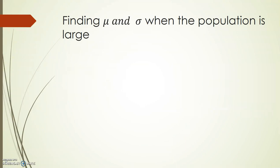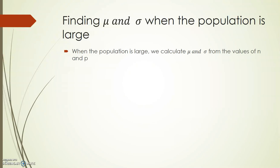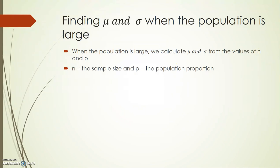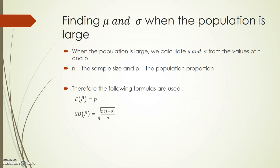Now let's look at an example when we're finding mu and sigma when the population is large. You'll remember from our previous work that when the population in a question is large, we treat it like a binomial distribution. Therefore, we calculate both mu and sigma from the values of n and p in a binomial distribution. Remember, n is equal to the sample size and p is equal to the population proportion. The expected value of p-hat is equal to the population proportion p, and the standard deviation of p-hat is equal to the square root of p times (1 minus p) over n.